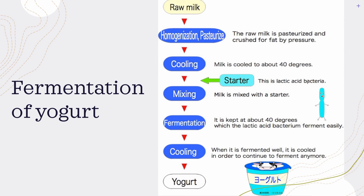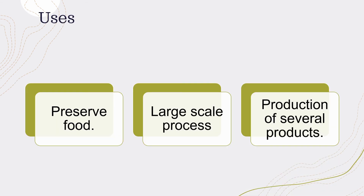The starter is lactic acid bacteria, which helps to ferment the yogurt. The milk is mixed with the starter — lactic acid bacteria — then fermentation starts. It is kept at about 40 degrees, which helps the lactic acid bacteria to ferment easily. Once well fermented, it is cooled to stop further fermentation, and then the product is ready.